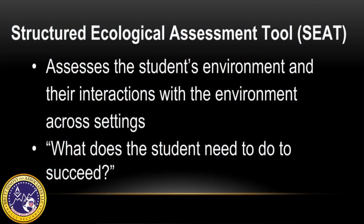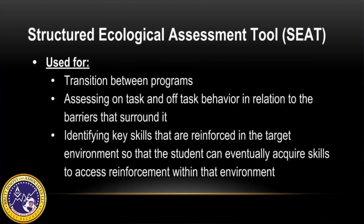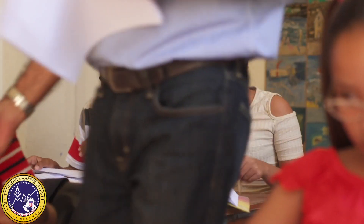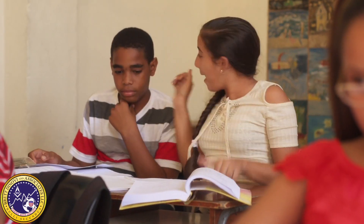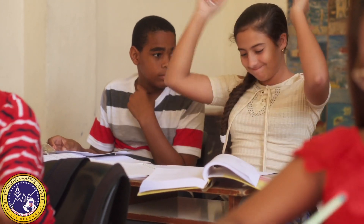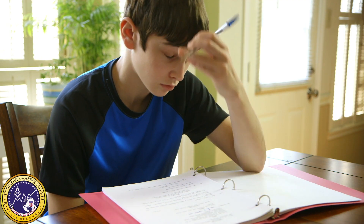The SEAT assesses the student's environment and their interactions with the environment across settings. The overall question in an ecological assessment is: what does the student need to do to succeed? This assessment tool can be used for transition between programs, to assess on-task and off-task behavior in relation to the barriers that surround it, and to identify key skills that are reinforced in the target environment so that the student can eventually acquire skills to access reinforcement within that environment. This can help with students who are performing well in one subject or setting but struggling in others.